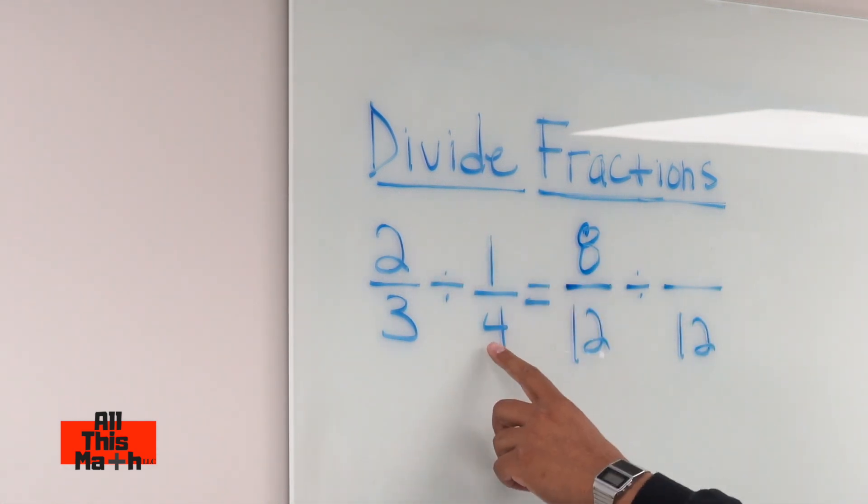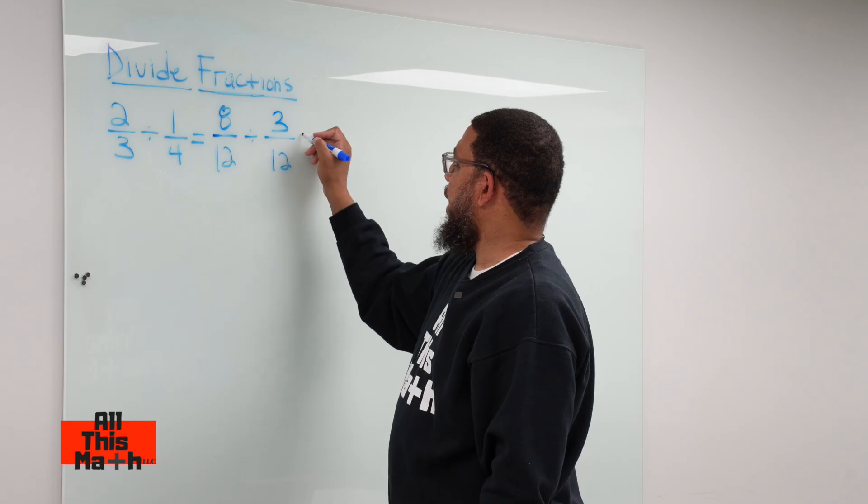Now the same thing with 1/4. If 4 turns into 12, I do 4 times 3. So if I'm doing 4 times 3 on the bottom, I need to do 1 times 3 on top. That gives me 3.